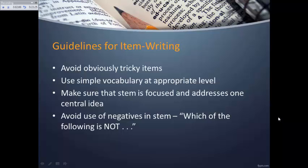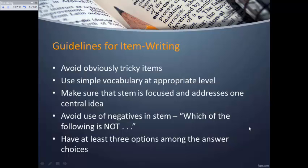Avoid the use of negatives in a stem—for example, 'which of the following is not A, B, or C'—because students may misinterpret the question and the items, introducing unnecessary confusion. You should have at least three options among the answer choices unless it's a true/false or yes/no question, to give the item enough discrimination so that the student really has to apply their knowledge to choose the correct response.